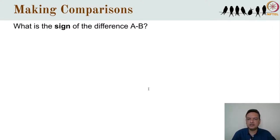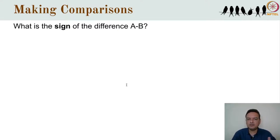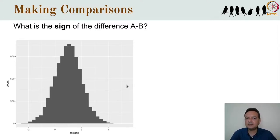For paired data, the distribution is that of possible mean differences. For unpaired data, the distribution is of possible differences in the means. In both cases we ask what proportion of possible sample outcomes fall above 0, i.e., differences are negative, meaning B is greater than A. We can find this by counting up what proportion of bootstrap outcomes are below 0. In a distribution of 10,000 bootstrap means of differences, if 1,626 are negative, that means 16.26% of the means of differences are negative.